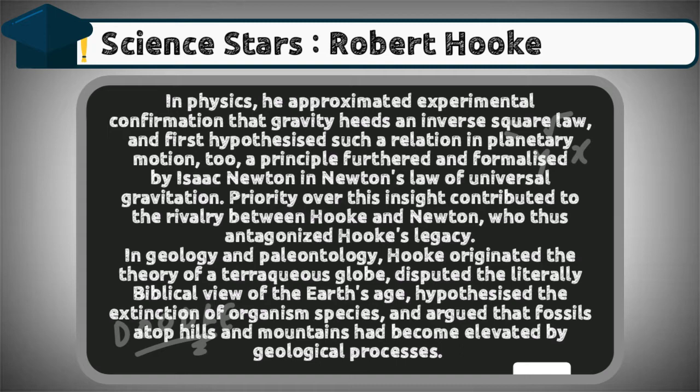Hooke first hypothesized the inverse square law relation in planetary motion — a principle furthered and formalized by Isaac Newton in Newton's law of universal gravitation. Priority disputes over this insight contributed to the rivalry between Hooke and Newton, who antagonized Hooke's legacy. In geology and paleontology, Hooke originated the theory of a terraqueous globe, disputed the literal biblical view of the Earth's age, and hypothesized the extinction of organism species.